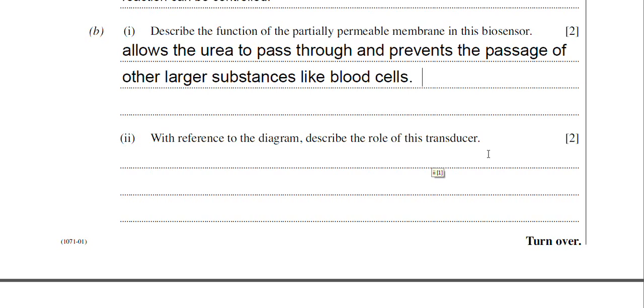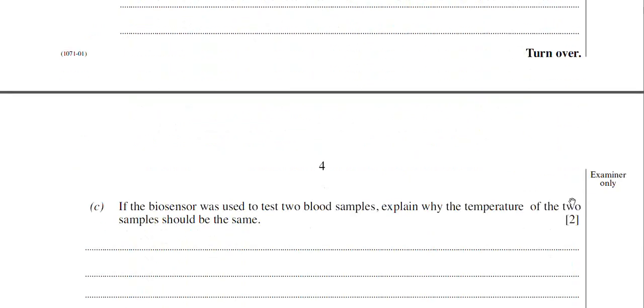Now again, in most questions on biosensors, you're asked about the function of the transducer, and it always has two marks associated with it. So that means that there are two functions that you need to quote. The first one is that the transducer actually absorbs the products from the enzyme-catalyzed reaction. So in this case, the urease converts urea into ammonium ions. So the transducer will absorb the ammonium ions. That will get you one mark. And once it does that, it then converts these ammonium ions into an electrical signal. And that's the functions there of the transducer. So I've typed the answer in there.